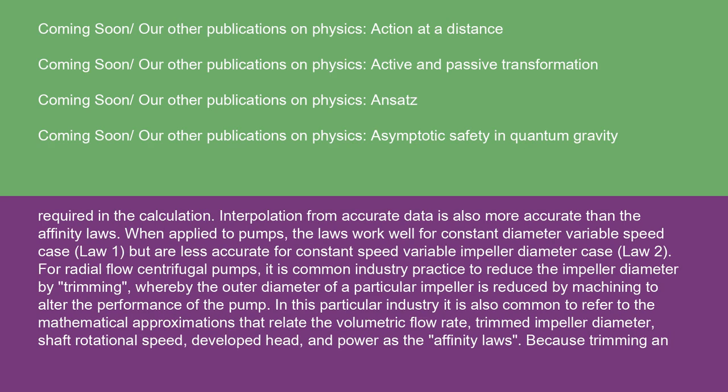required in the calculation. Interpolation from accurate data is also more accurate than the affinity laws. When applied to pumps, the laws work well for constant diameter variable speed case (Law 1), but are less accurate for constant speed variable impeller diameter case (Law 2). For radial flow centrifugal pumps, it is common industry practice to reduce the impeller diameter by trimming, whereby the outer diameter of a particular impeller is reduced by machining to alter the performance of the pump.